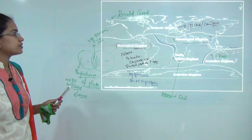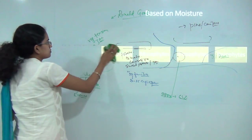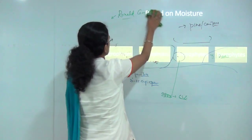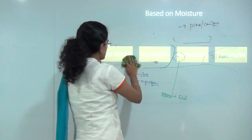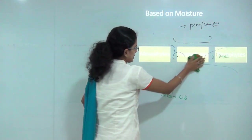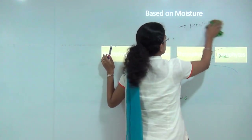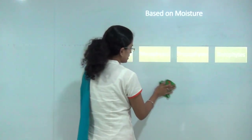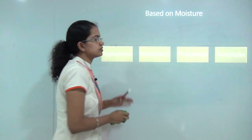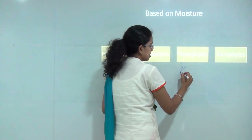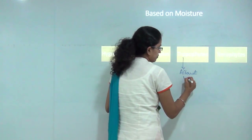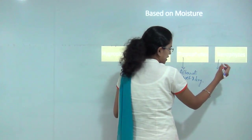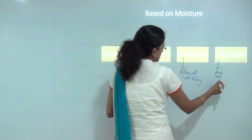There are also other classifications for plants. Based on moisture, plants are divided into four categories: hygrophytes, which require a lot of water; mesophytes, which require an adequate amount of water; tropophytes, which grow in alternate wet and dry cycles; and xerophytes, which can grow in dry areas like cacti.